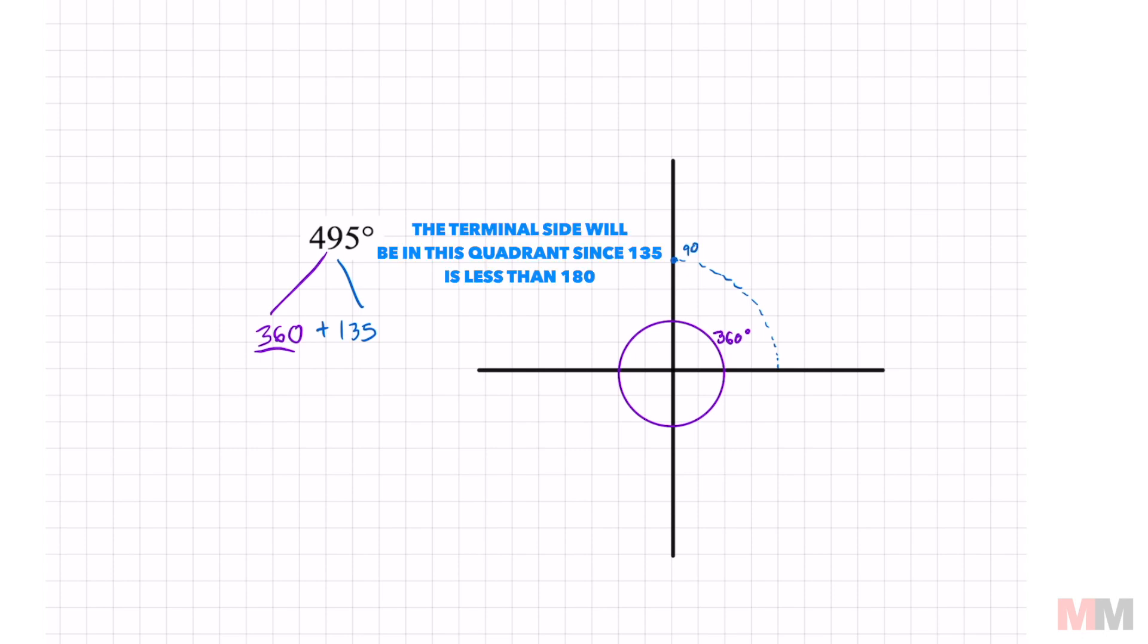So just take 135 and subtract 90, and you'll figure out how much more you have to go. I have to go 45 more degrees. 45 and 90 is 135. There's my terminal side right there. And now if I draw my triangle, I just take the tip of my terminal side, go all the way down to the x-axis,